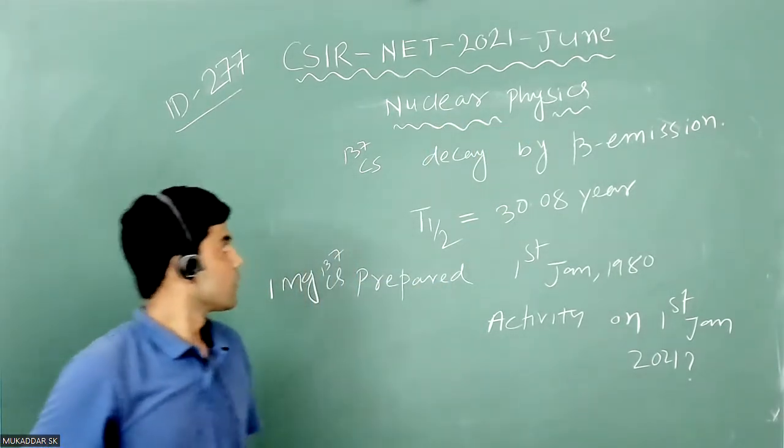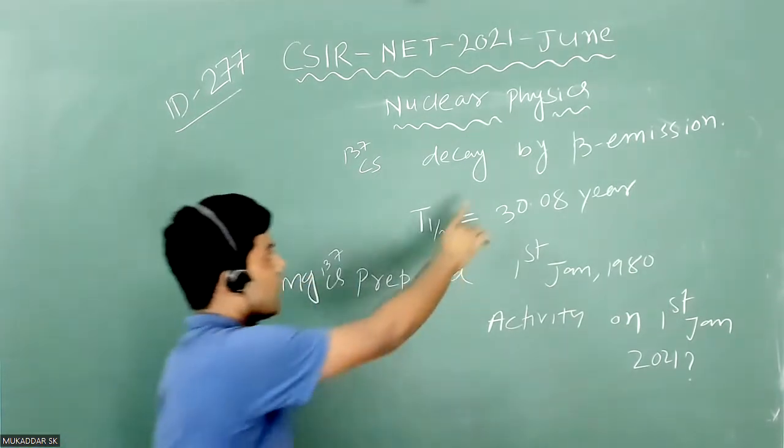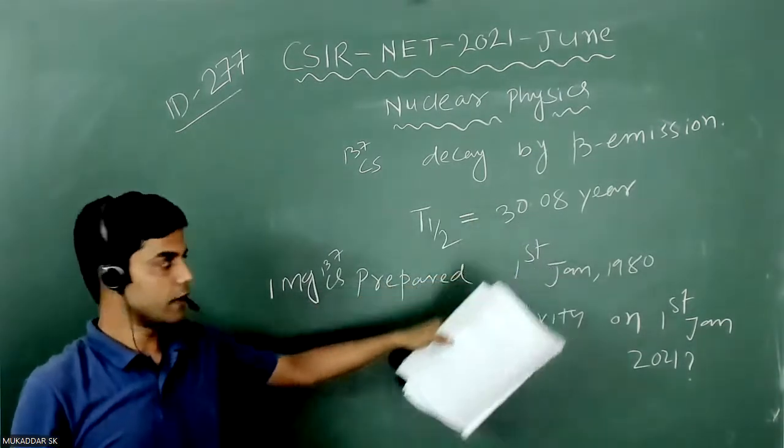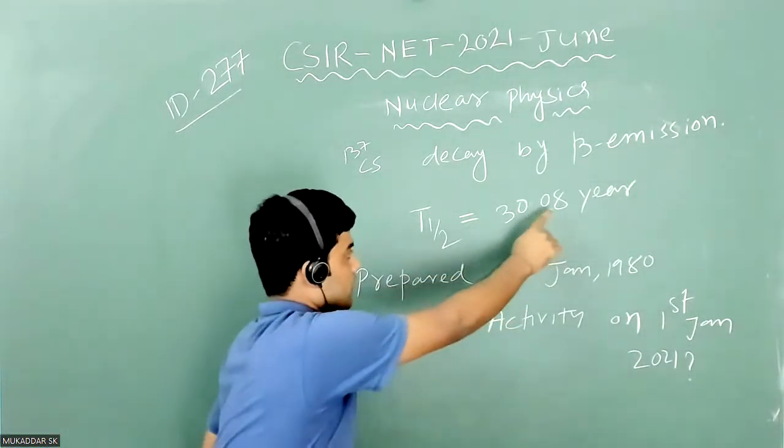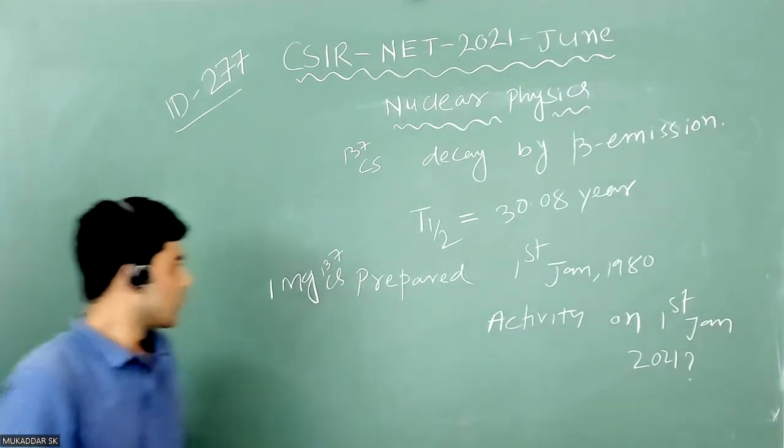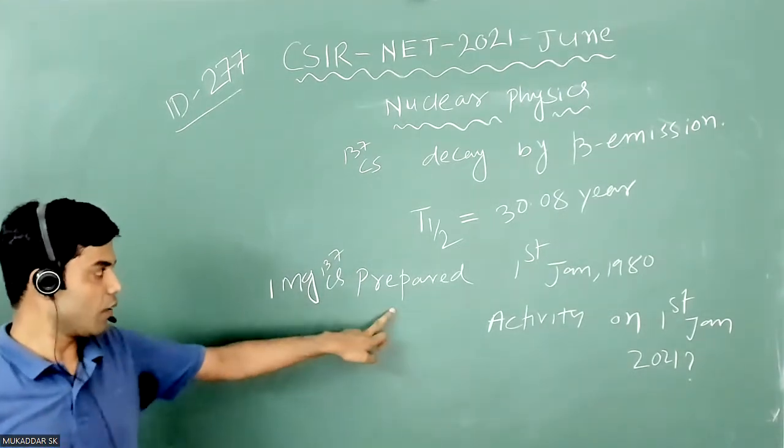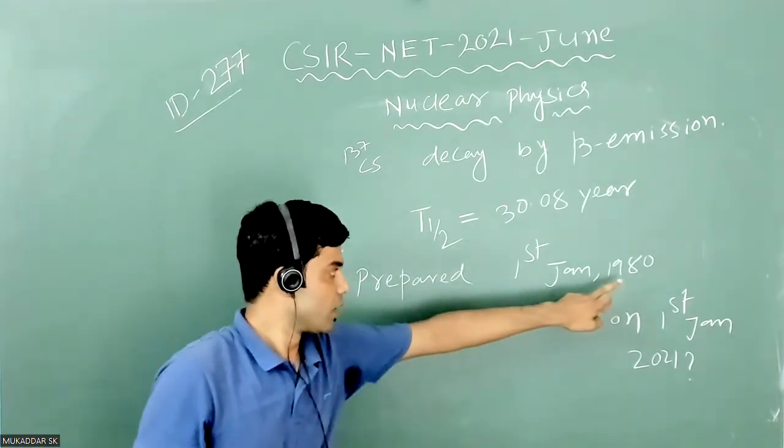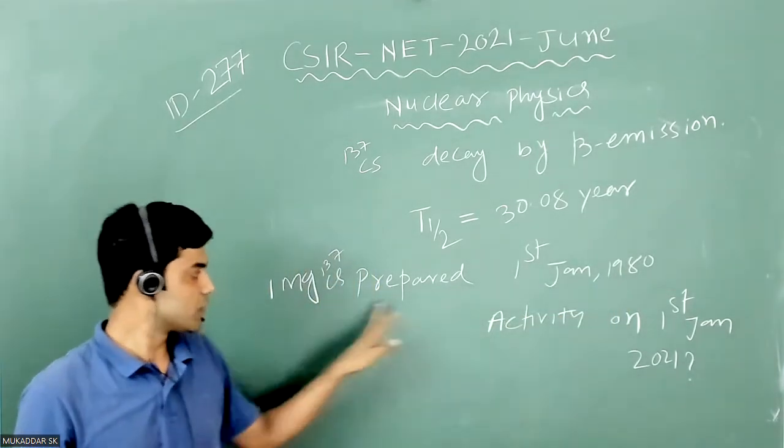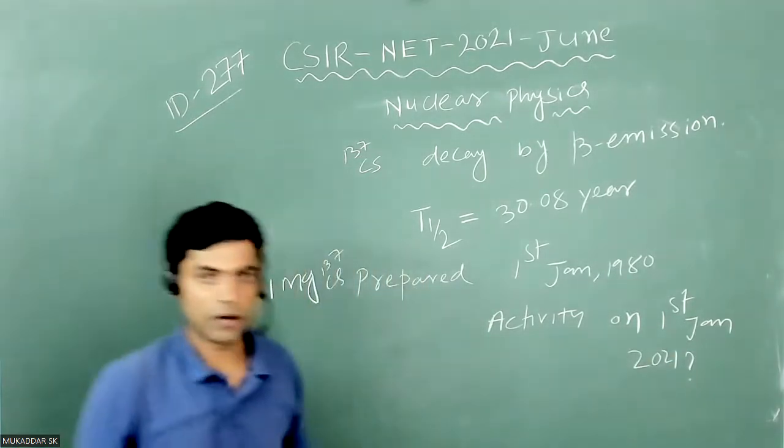In this question, Cesium-137 decays by beta emission with a half-life of 30.02 years. 1 milligram of Cesium is prepared on 1st January 1980. Then we have to calculate the activity of the sample on 1st January 2020.